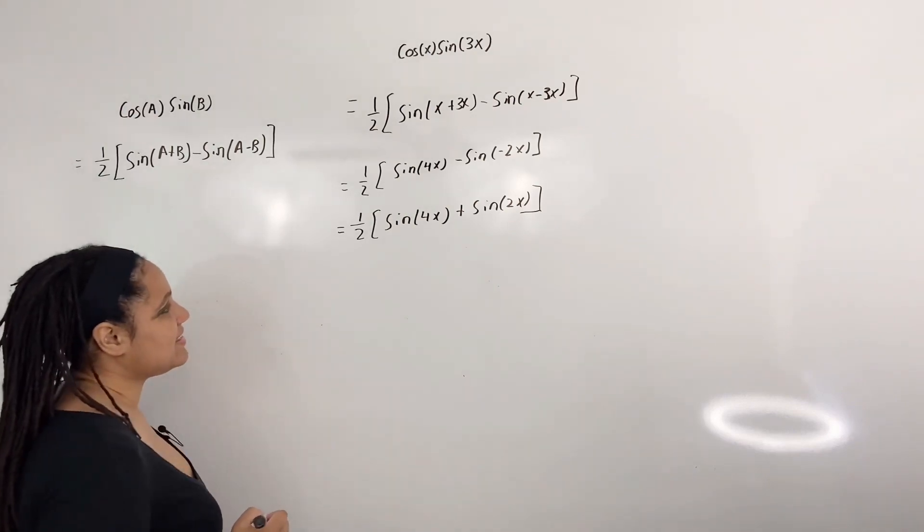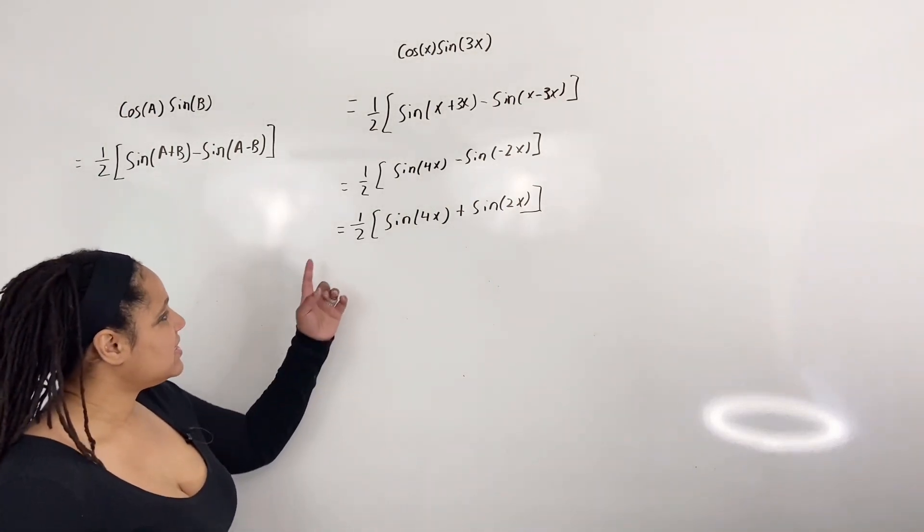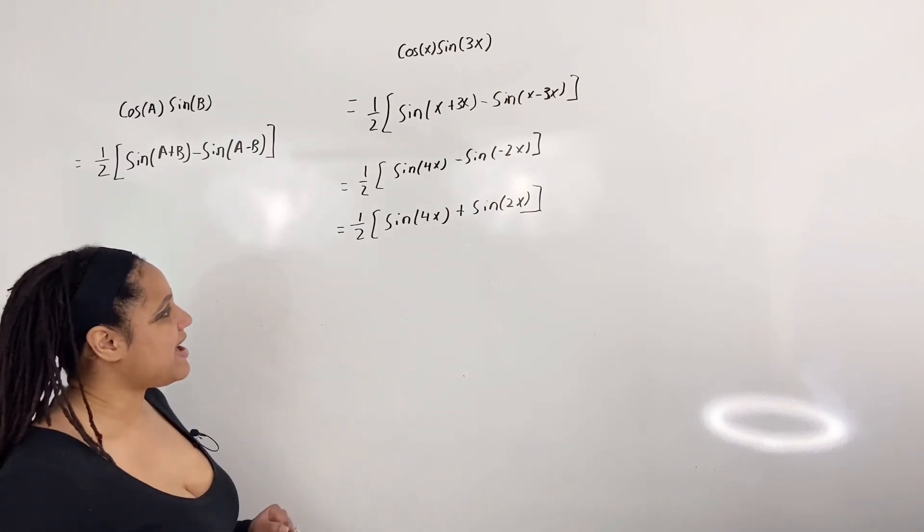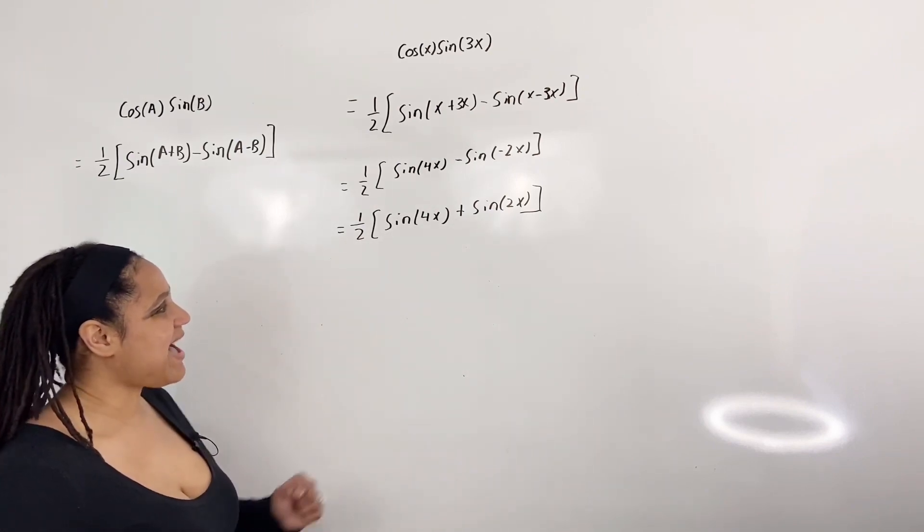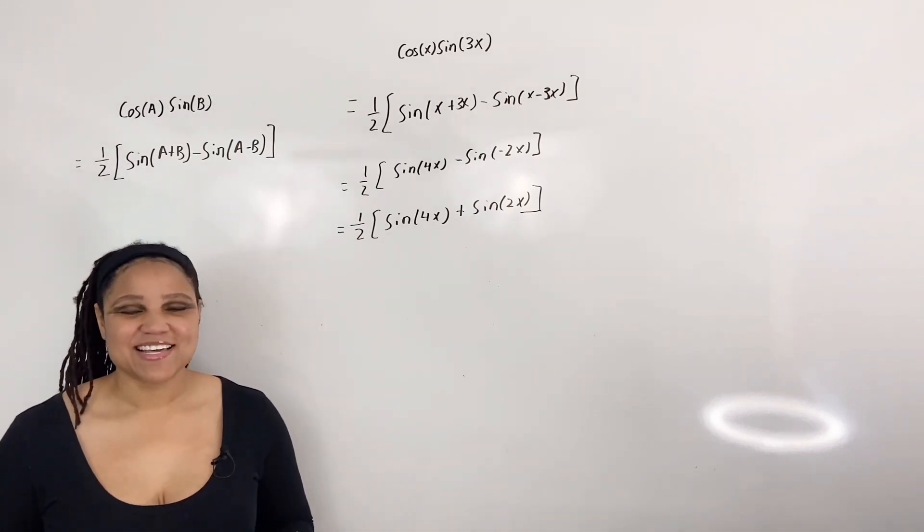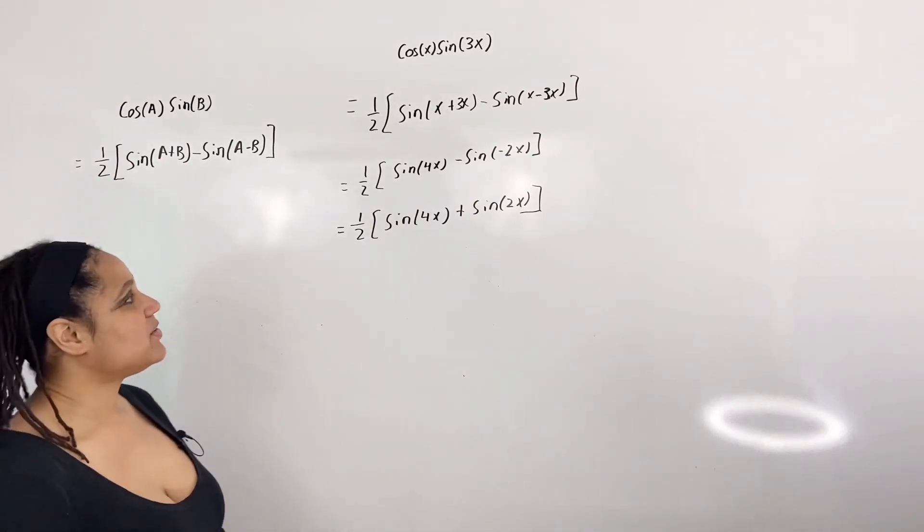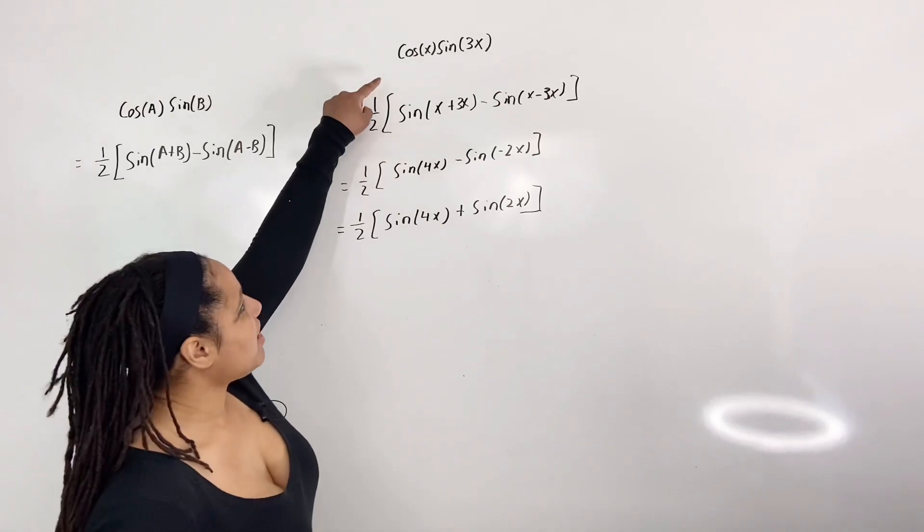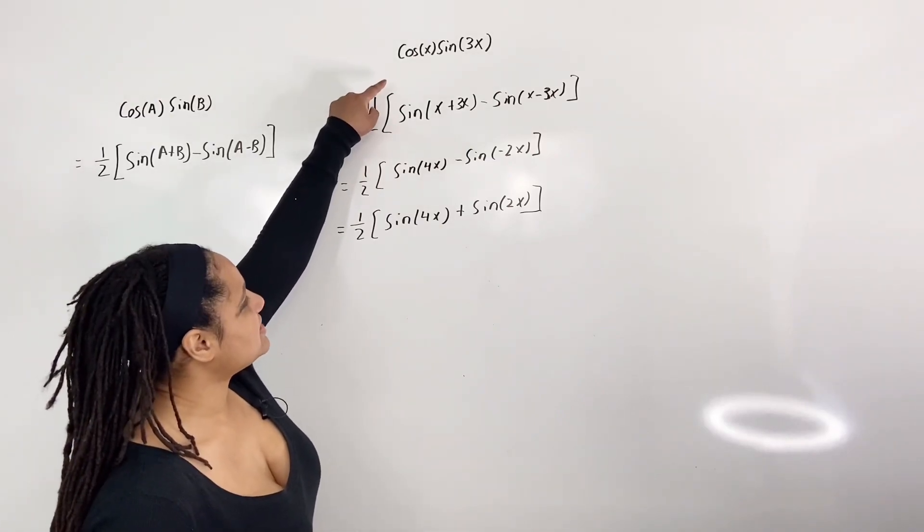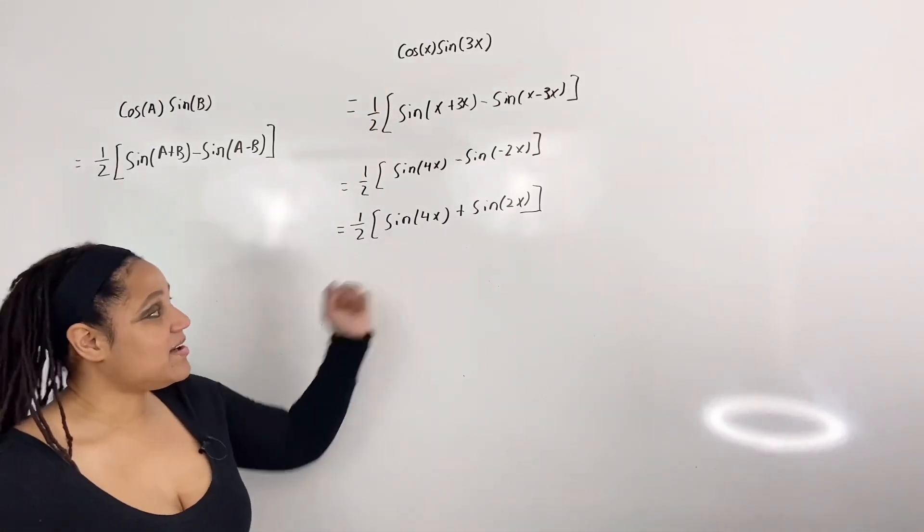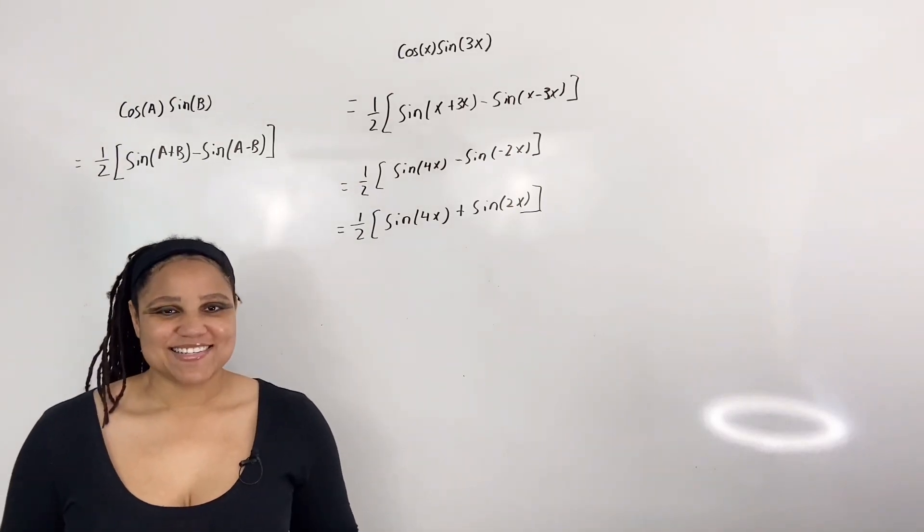And this is as far as you can go. You could distribute the one-half across, but I will leave it just like this. Either way is correct. Notice that we started with a product of cosine and sine, and now we have a sum of cosine and sine.